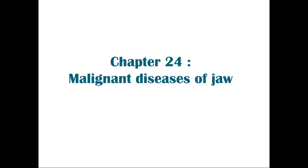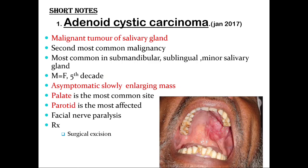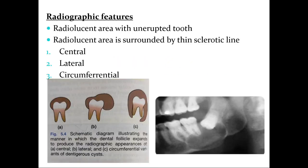The management of the dentigerous cyst involves enucleation or marsupialization of the cyst along with removal of the affected impacted tooth. A complication is that if left untreated, it can lead to ameloblastoma.